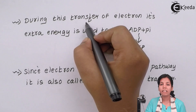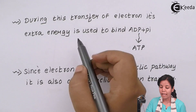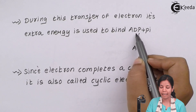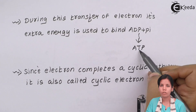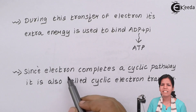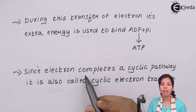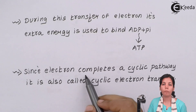During the transfer of electrons in cyclic photophosphorylation, extra energy is used to bind ADP (adenosine diphosphate) to form ATP (adenosine triphosphate). Cyclic photophosphorylation is called 'cyclic' because electrons complete a full cyclic pathway — they move in a proper circle without breaking anywhere. The cycle is a complete cycle without pauses.